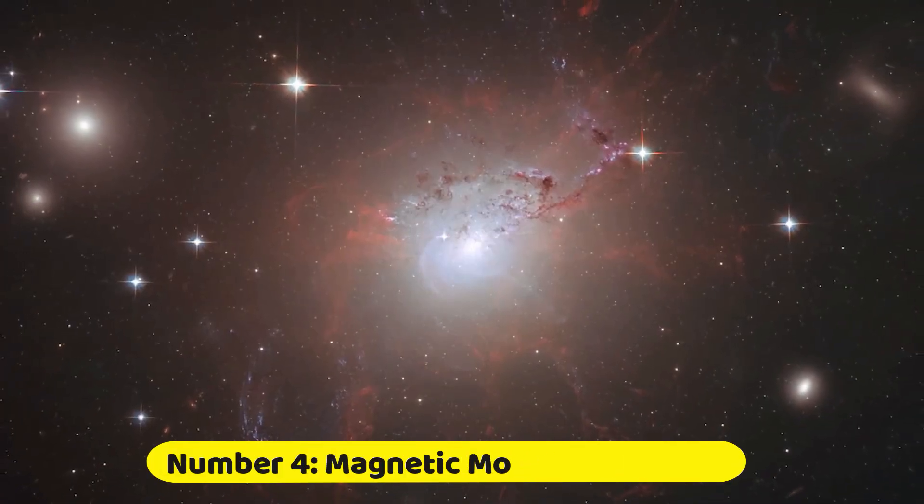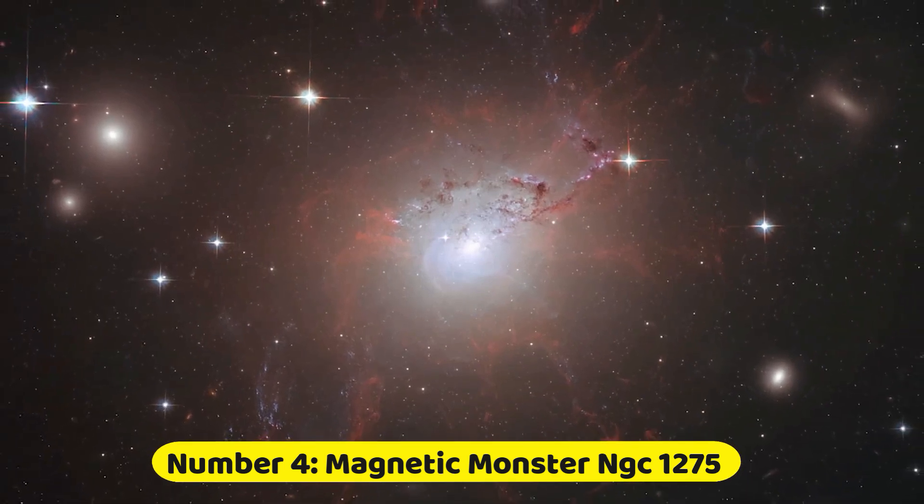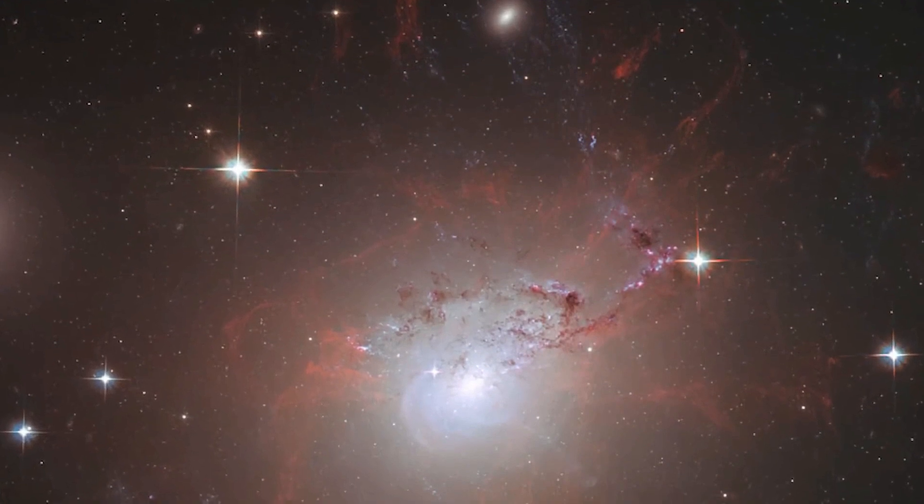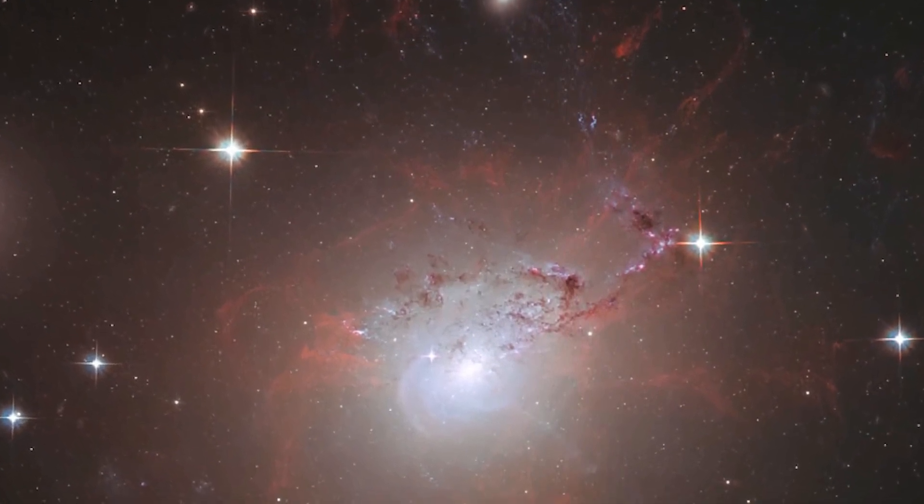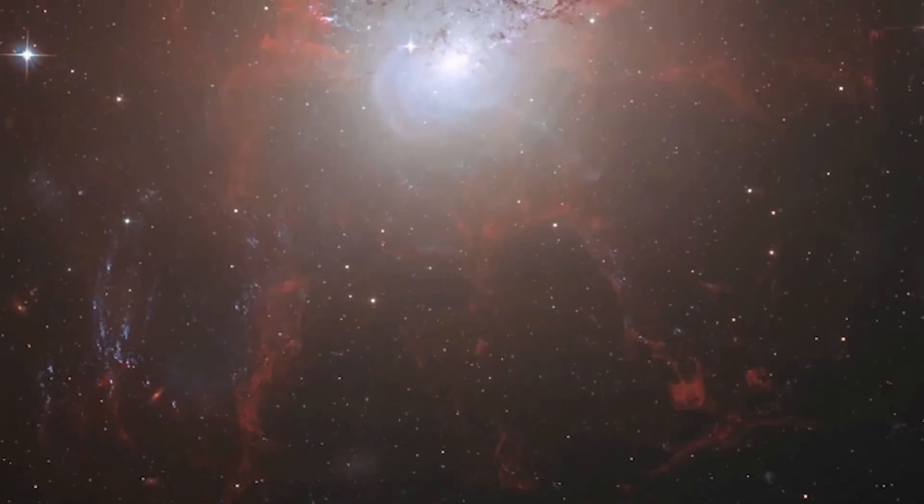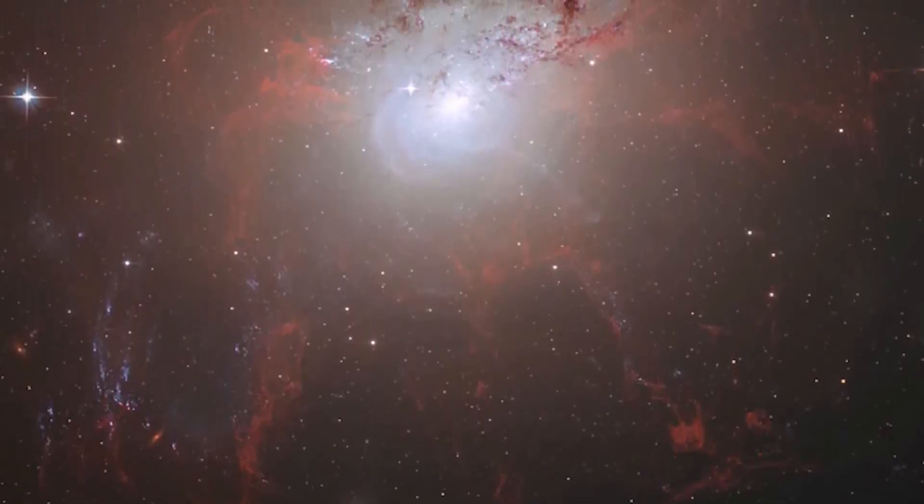Number 4. Magnetic Monster NGC 1275. This captivating image of NGC 1275 showcases the reddish, intricate, thread-like formations that envelop its radiant central area with exceptional precision and sharpness.